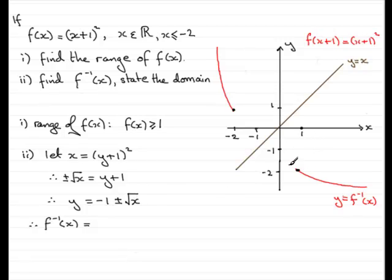But if I put, if I take the minus option here, -1 - 1, you'll find that we get -2, which corresponds to this point here. So you can clearly see that it's going to be -1 - √x.